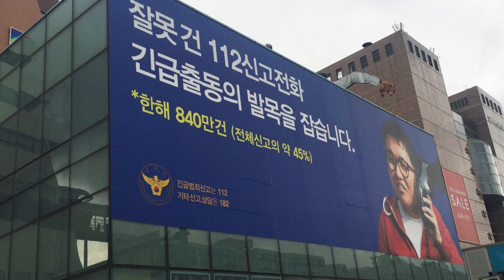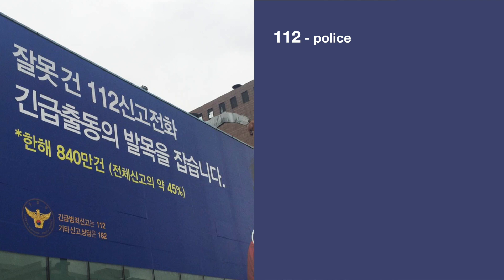There are three lines that we're going to read together. The first line is right here: 잘못 건 일일이 신고 전화, 긴급 출동의 발목을 잡습니다. You see a number here — 112 — read in Korean. That's the number you need to dial to call the police in Korea. Here are some other numbers you might want to know.